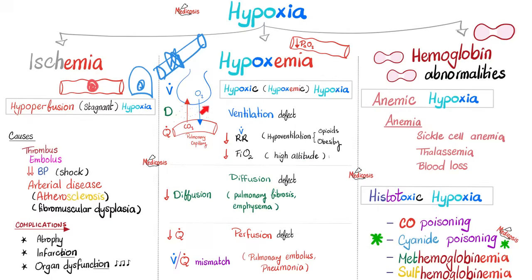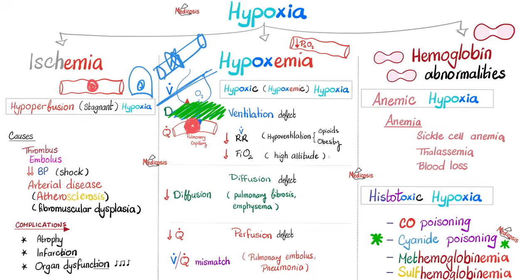Diffusion defect: this area has pulmonary fibrosis, or I may have loss of elastin in the alveoli, meaning oxygen cannot diffuse. Pulmonary fibrosis is the most typical and classic case. How about decreased perfusion? The most important example is pulmonary embolus. An embolus obstructing the vessel means oxygen will not be able to go to the left atrium or be distributed to the rest of the body. Pneumonia can also cause this — it is a case of consolidation where alveolar units become solid instead of air.